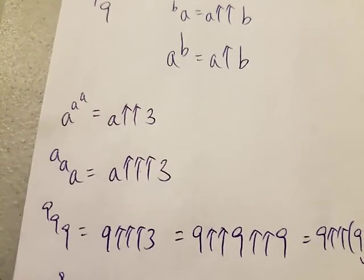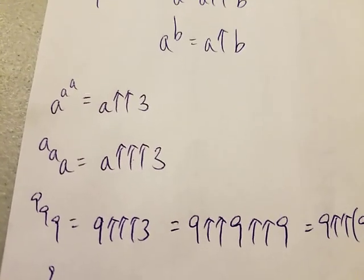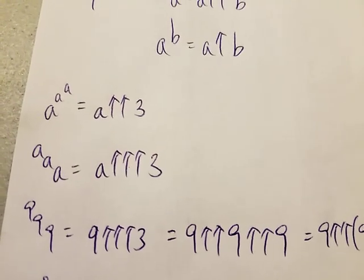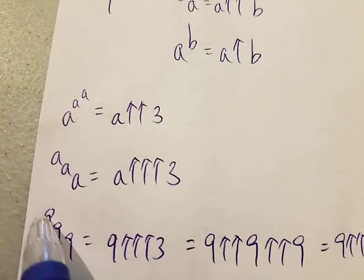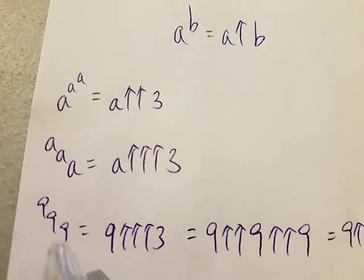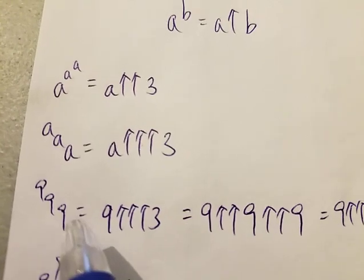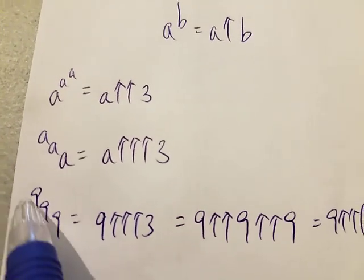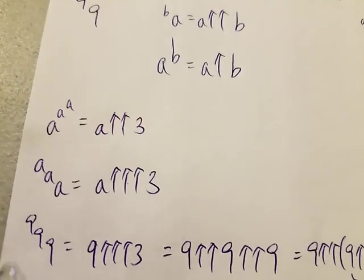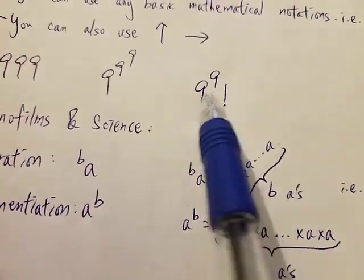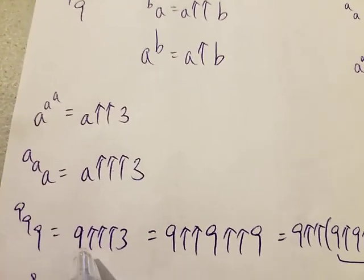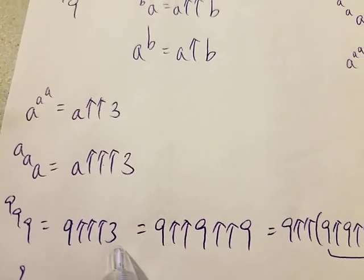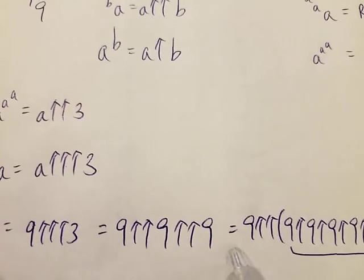Obviously 9 is the biggest digit between 0 and 9, so we're going to pick 9. It turns out that 9 pentation 3 — written as 9 triple arrow 3 — is the biggest number you can make with three digits. But how big is this number? It's very, very, very big — way bigger than the previous two answers. So this equals 9 triple arrow 3, which is 9 double arrow 9 double arrow 9.